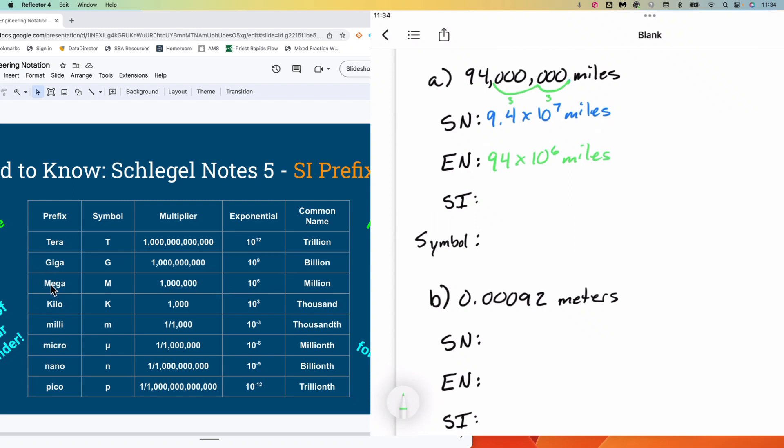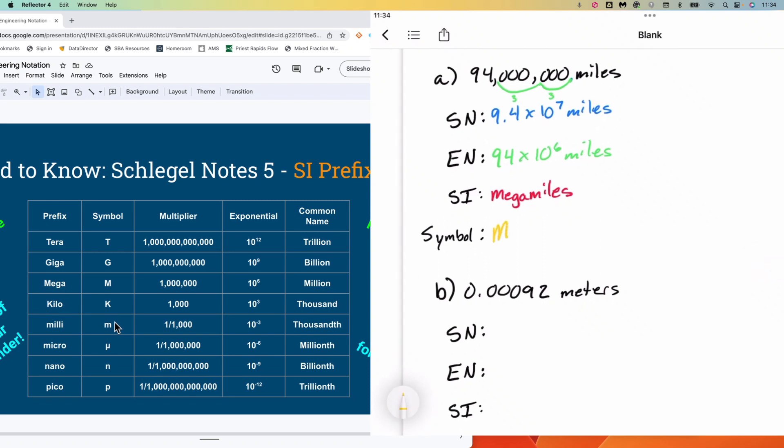The SI prefix is going to be mega, and the symbol is a capital M. So for the SI prefix, we are going to have megamiles. And for the symbol, recognize that it is a capital M, not a lowercase m like milli. And so capital M, miles for our symbol representation of this. Again, four different ways to show the same number.